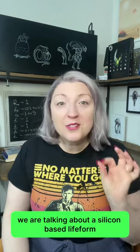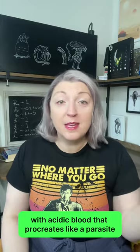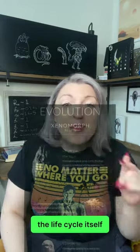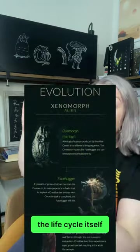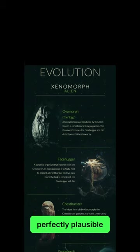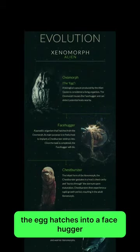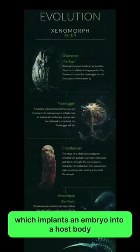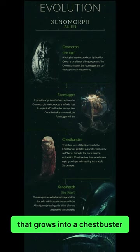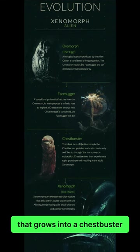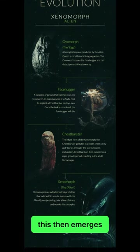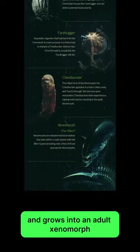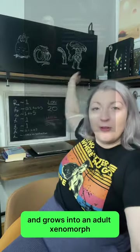We are talking about a silicon-based life form with acidic blood that procreates like a parasite. The life cycle itself is perfectly plausible. The egg hatches into a face-hugger, which implants an embryo into a host body that grows into a chest-burster. This then emerges — to put it kindly — and grows into an adult xenomorph.